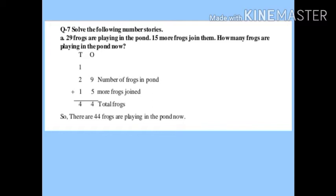Here, 29 represents the number of frogs playing in the pond. 15 represents 'more frogs join.' Write what each number represents — that is the statement. Then we add both numbers.